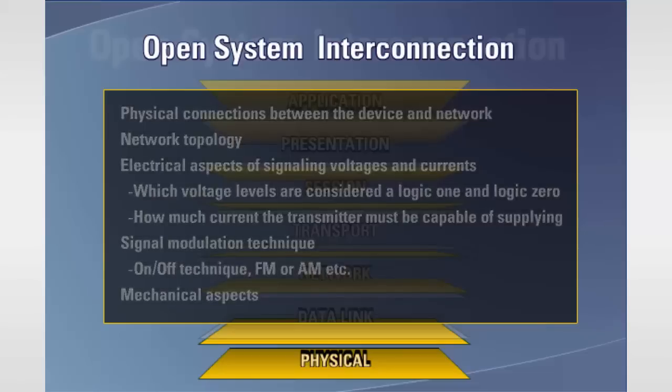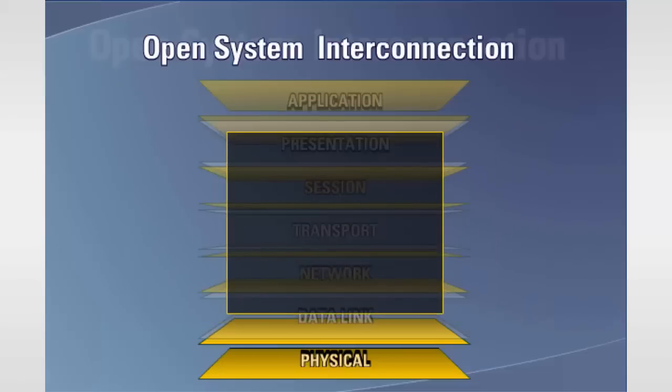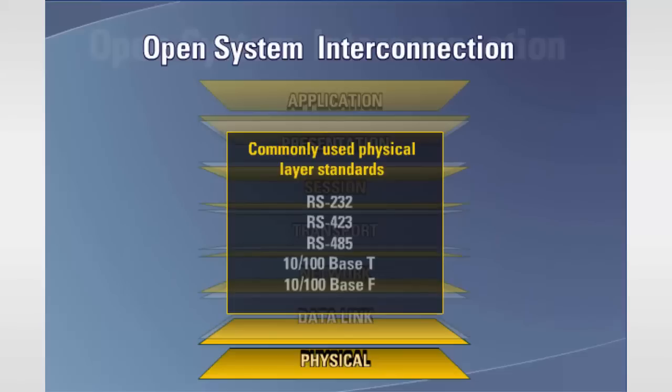In utility and industrial power system applications, the most commonly used physical layer standards are RS-232, RS-423, RS-485, 10/100BASE-T, and 10/100BASE-F Ethernet. We will learn about these standards in depth in the following sections of this course.